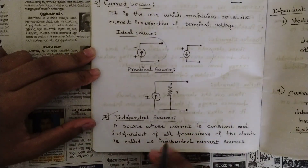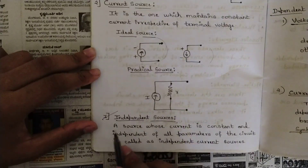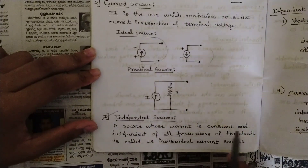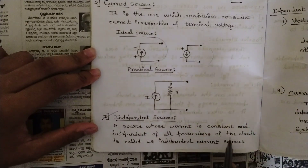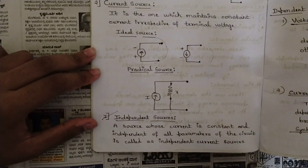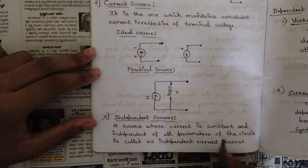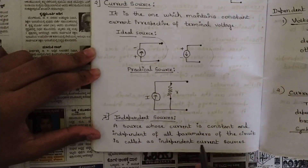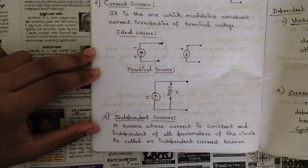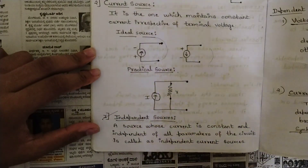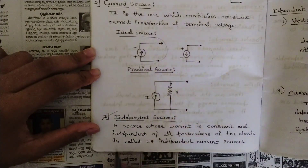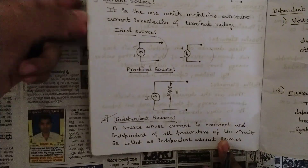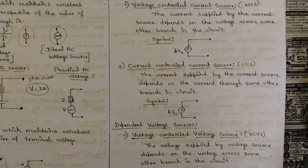Independent sources are important — they may be asked as a sub-question for one or two marks. An independent current source is one whose current is constant and independent of all parameters of the circuit. The current is not dependent on any other passive or active elements in the circuit.